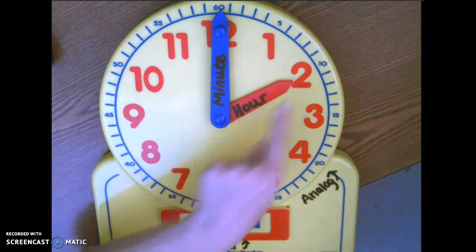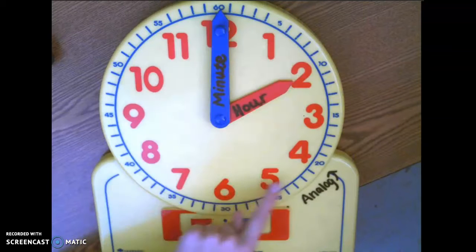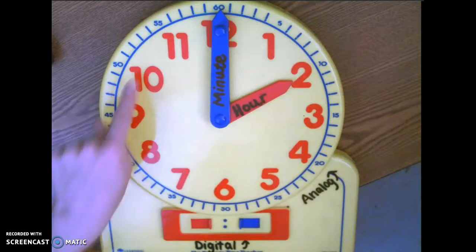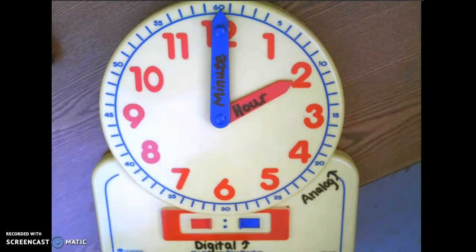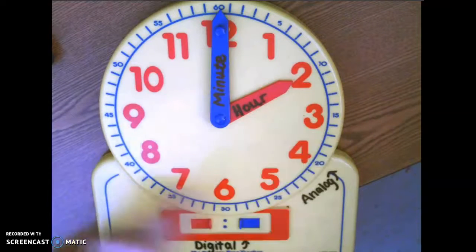The hour hand tells us which hour we are in. Remember, the clock has 12 hours on it and we go through the clock two times a day for 24 hours.